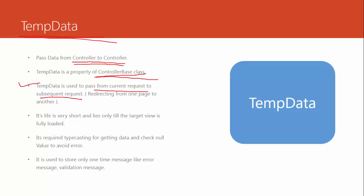We are going to use TempData in a future video with a practical demonstration, since it is used to pass data from controller to controller, typically involving page redirection. For theoretical knowledge, understand that it passes data from the current request to the subsequent request — i.e., it redirects from one page to another. Its life is very short and lasts only until the target view is fully loaded. Once the target view is fully loaded, the TempData value becomes null. It requires typecasting for getting data and you must check null values to avoid errors.